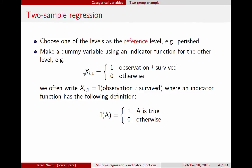We can write this dummy variable as an indicator function. This capital I is an indicator function, and inside the parentheses is the statement that we want to say is either true or false — that is, is observation i among those that survived? Indicator functions are only ever one or zero: it's one if the statement a is true, and zero if it's not true. So if observation i survives and that is in fact a true statement, then this indicator function is one, which is exactly what we showed.